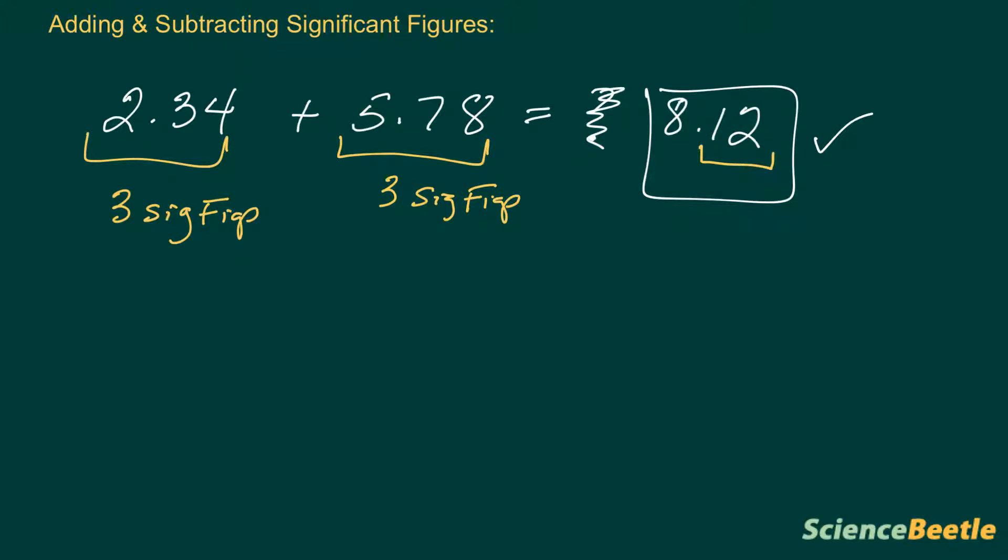But what if we change the numbers a little bit. So, let me give you a slightly different example. Let's say that we've got the number 2.3 and we want to add this to 5.78. Let's find out what is the actual answer. If we type that into the calculator, we take 2.3, add that to the 5.78, we wind up with the following answer, 8.08.